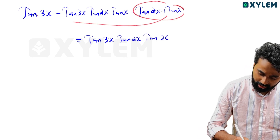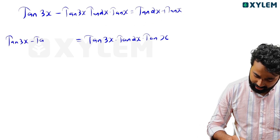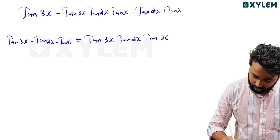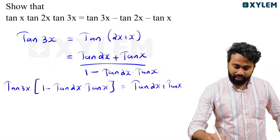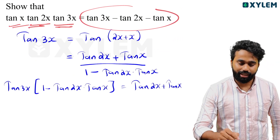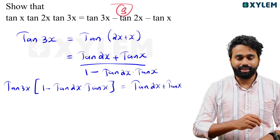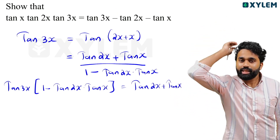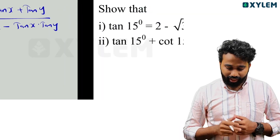tan 3x into tan 2x into tan x completed is equal to tan 3x minus tan 2x minus tan x. I'm going to prove to you tan 3x minus tan 2x minus tan x is equal to tan 3x into tan 2x into tan x. It's a 3-mark question. I'm going to show you how you can get full marks.